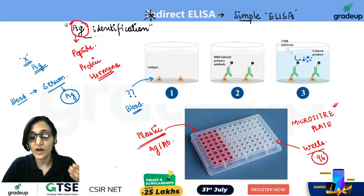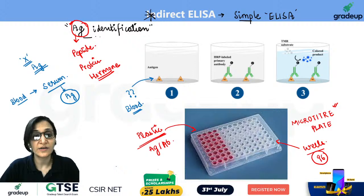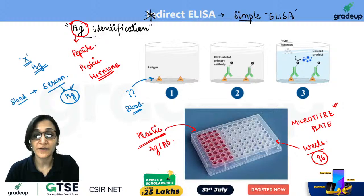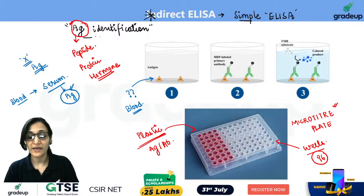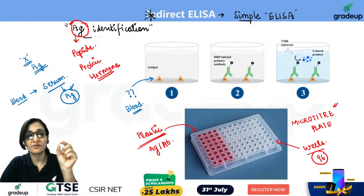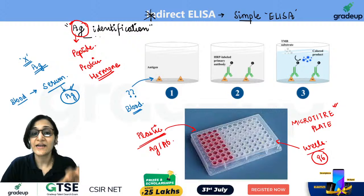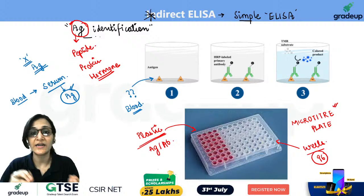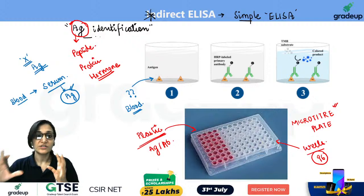The serum contains the antigen. In Direct ELISA, the antigen comes from the blood of the patient whom the doctor has asked to get an ELISA test done. Blood is taken, serum is prepared from it, and the serum is added into each well of the microtiter plate. As soon as the serum is added, the antigen present will bind to the plate because the plastic surface binds antigen and antibody.